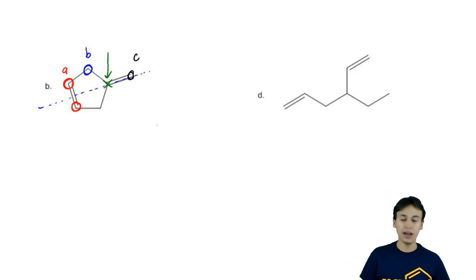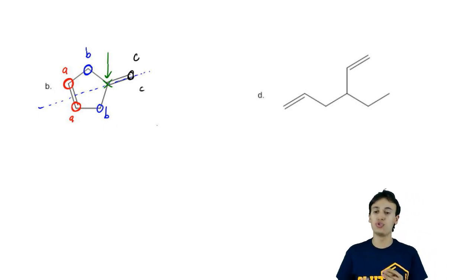Now, would we have to also draw the signals on the other side? No, because this one is also A, this one is also B, this one is also C. That's what you do with a plane of symmetry. It means that any conclusions you have about one side are going to be the same exact ones on the next side.